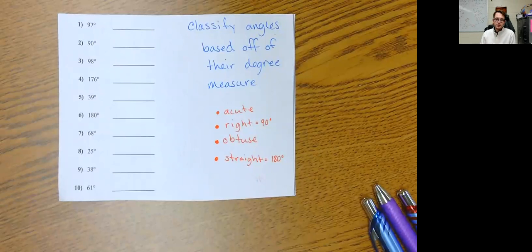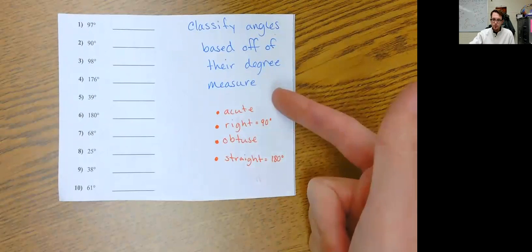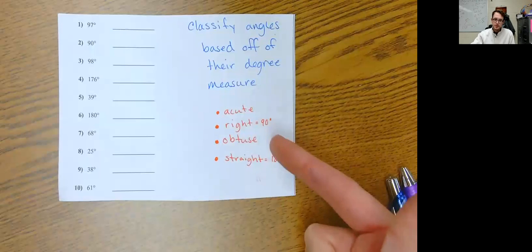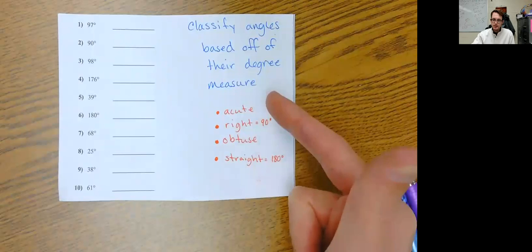on how to classify angles based on their degree measure. And if you watch the classifying angles video, there's four types of angles: acute angles, right angles, obtuse angles, and straight angles. Acute angles are between 0 and 90.